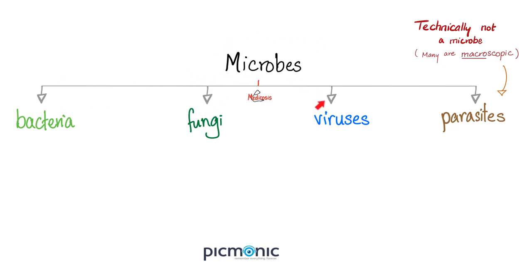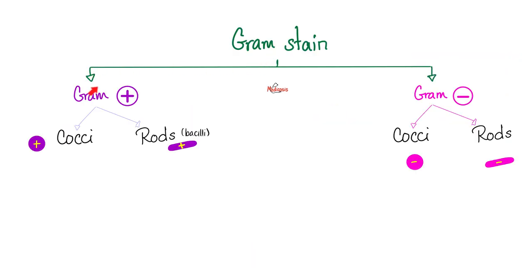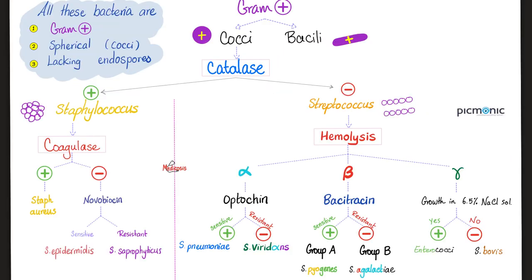Microbes are bacteria, fungi, viruses, and parasites. Speaking of bacteria, they could be gram-positive or gram-negative. If it's gram-positive, it could be cocci or rods. Staphylococcus aureus is a gram-positive cocci — catalase positive, coagulase positive, spherical, lacking endospores.